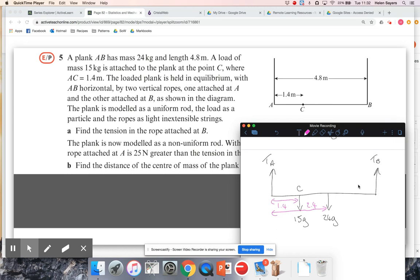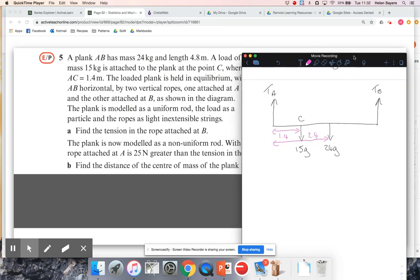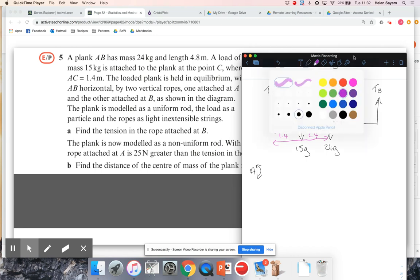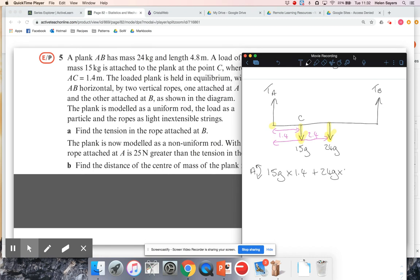Okay, and find the tension in the rope at B. So if I want the tension in this rope, I think the most sensible thing to do is going to be to take moments about A. So if I take moments about A, I have got two forces, so if my pivot is at A, I've got these two forces that are both going to be trying to turn it clockwise. So the 15g force times the distance of 1.4, plus the 24g force times the distance of 2.4. And then I'm also going to have the tension at B is going to be the only force trying to turn it anticlockwise. So the tension at B is what I'm trying to find, and that's the full length of the rod, so that's 4.8 metres away from A.